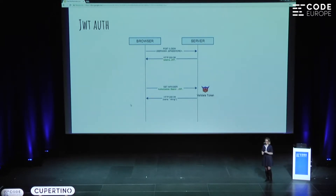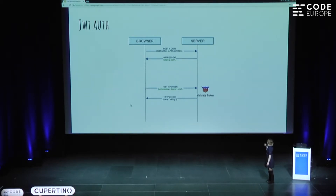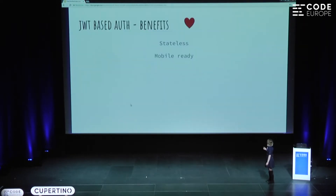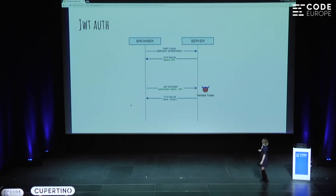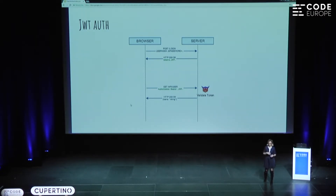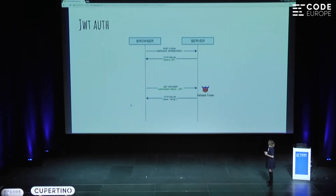From the client-server perspective, things look very similar to the cookies example. The browser sends the credentials again, but the fundamental difference is that the server, instead of creating a session ID and storing it in a session store, now generates a token. It sends that token back as part of the response header. And then with every following request, we are sending the token in the authorization header.